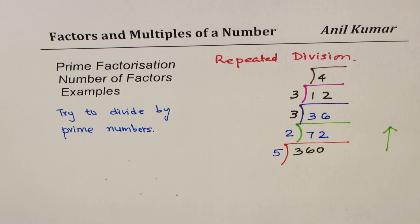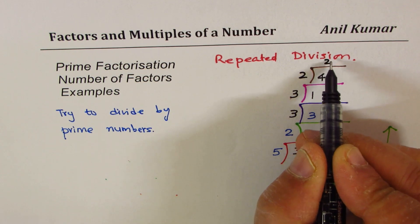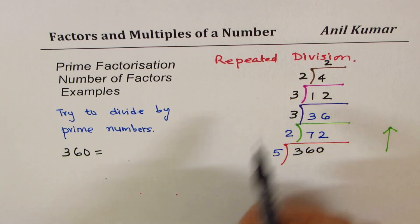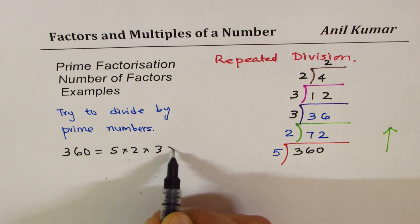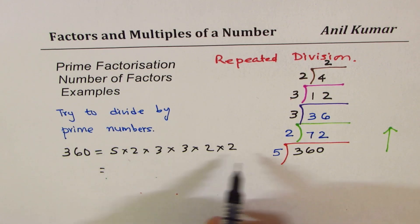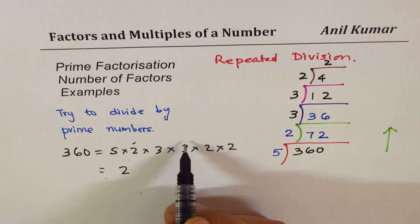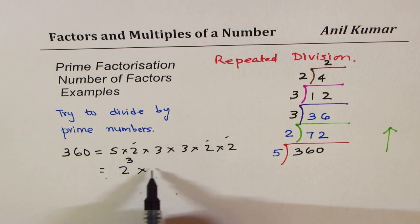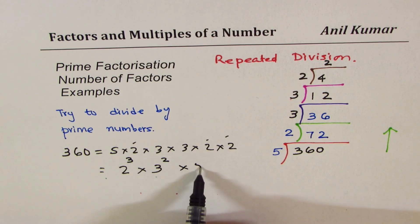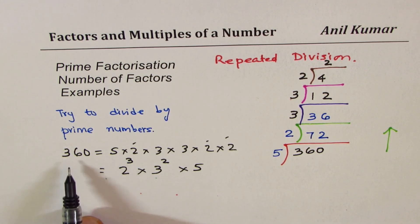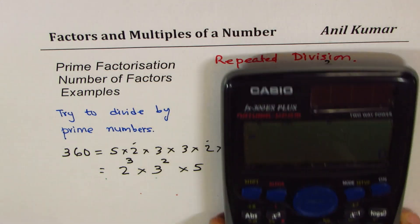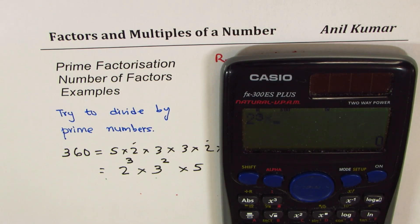Do you see how we are moving up with all the prime numbers? We could write 360 as a product of all of these: 5 times 2 times 3 times 3 times 2 times 2. Let's rearrange. How many 2's are there? 1, 2, 3 — so write 2 cubed, which means 2 times 2 times 2. How many 3's? 2 — so 3 squared. And times 5. So 360 equals 2 cubed times 3 squared times 5, and this is called prime factorization.